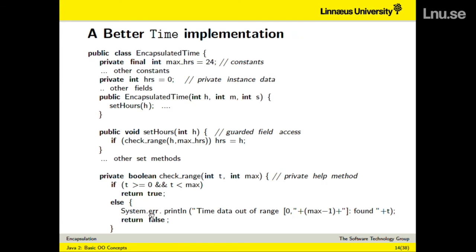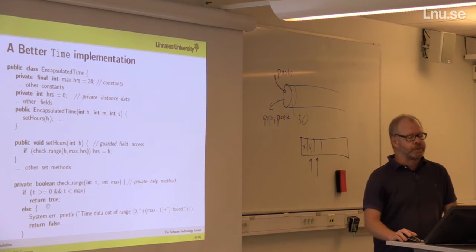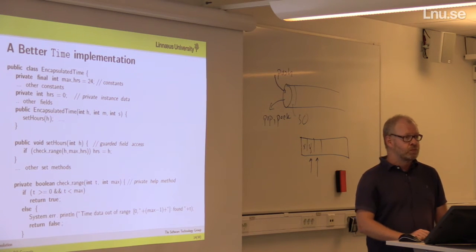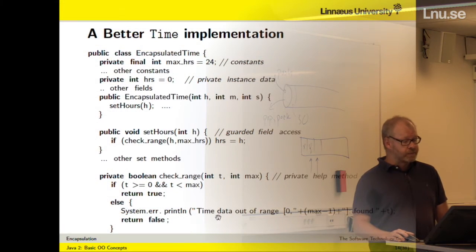In the previous lecture I used System.out. What is System.err? It is a different channel to the display. If you use System.err in Eclipse, it will come out in red. When writing error messages or warning messages, you can use System.err so it's easier to spot in the console. When you write a message to the console while developing, choose between System.out and System.err — System.err should signal that something is wrong.